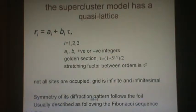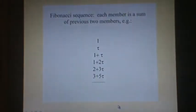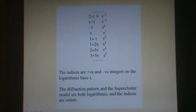The symmetry of the diffraction pattern follows the symmetry of the foil, and is usually described as following the Fibonacci sequence. In the Fibonacci sequence, each term is the sum of the two preceding terms. When the ratio of those two terms is tau, the Fibonacci sequence forms a geometric series, which extends to infinity, and is also infinitesimal.